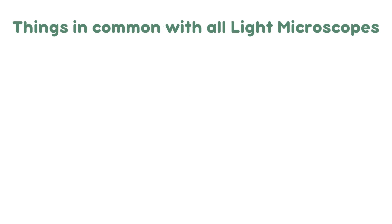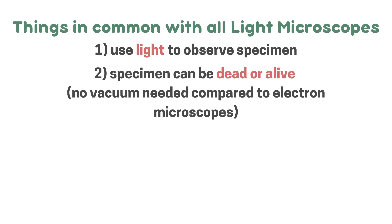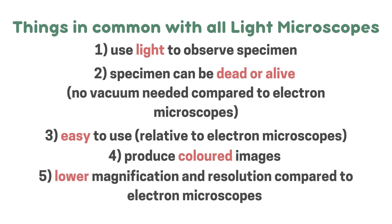Now we will look at the things in common with all light microscopes — both the common light microscope from GCSE and the LSC. They use light to observe the specimen. Specimens can be dead or alive, because unlike electron microscopes, no vacuum chamber is used, and vacuum chambers have no air. They are relatively easy to use compared to electron microscopes. They do produce coloured images because light consists of wavelengths of different colours. And they have a lower magnification and resolution compared to electron microscopes.